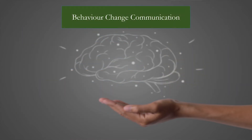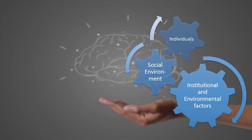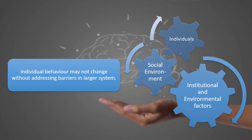Let's look at a systems approach to behavior change communication. In this approach, communication is recognized as being multi-directional — between multiple sources and multiple recipients, with each actor being a source and a recipient to all other actors they are in touch with. Individual behavior may not change without addressing barriers in the larger system. These barriers may be social, or in the institutional environment. The social environment includes family, local friendships, and influencers. The institutional environment, in the context of sustainable food systems, could include markets, government programs, and of course environmental factors including the natural and physical environment.